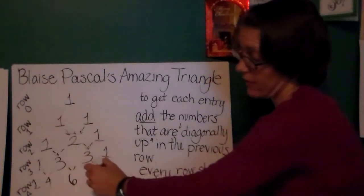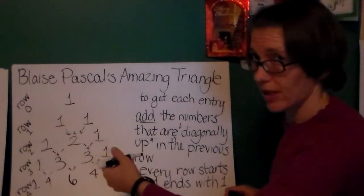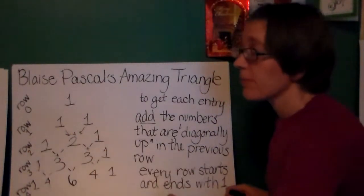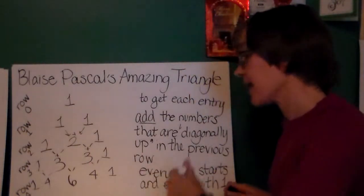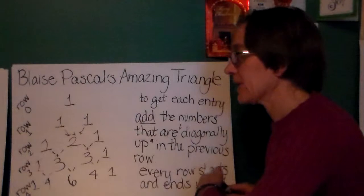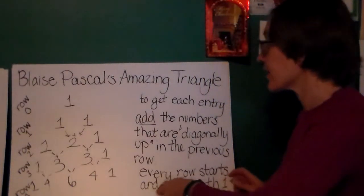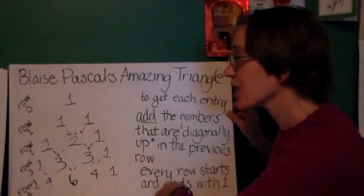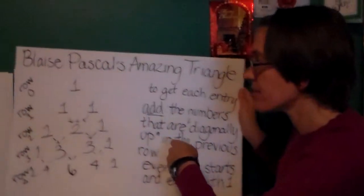You'll notice this nice parade of the counting numbers here and here. Other numbers that show up are the triangular numbers. Pascal's triangle has tons of exciting patterns in it that we won't explore today, but that you can by looking on the internet. So it turns out that this triangle is actually related to the notation that we just talked about.